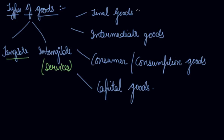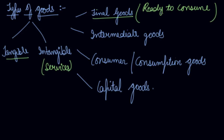First, let's understand final goods. Final goods are those goods that are ready to consume — no further processing is required on them. For example, a refrigerator which is fully packed in a carton, its packaging is done, and no further production has to be carried out on it. That is a final good — it has crossed the boundary line of production, gone through all levels of production, and is ready to use by the final users.